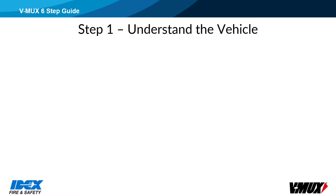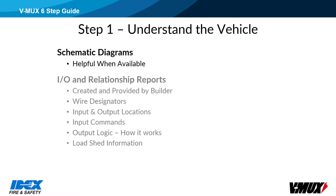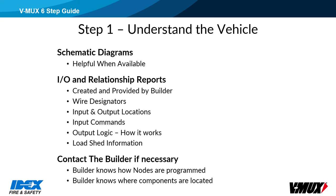Step 1: Understand the vehicle. The key to fixing any vehicle problem is understanding how it is supposed to work. Schematic diagrams are helpful when available. The IO and relationship report spreadsheets are generated by the vehicle builder — they show wire designators, input and output locations, input commands, output logic, and load shed information. Understanding load shedding may be key to solving some problems. An intermittent report of lights turning off could be caused by load shedding due to low voltage instead of an actual output failure. Contact the vehicle builder to get IO and relationship reports, schematics, or any other information that will help resolve the problems. The builder knows how the nodes are programmed and where components are located.